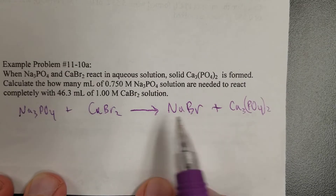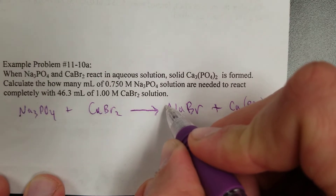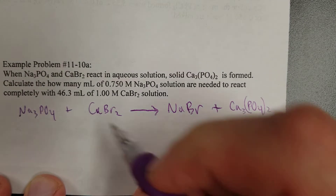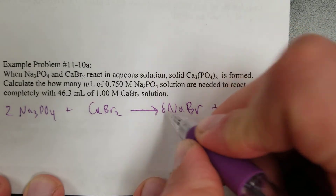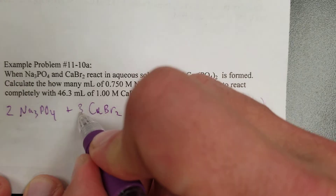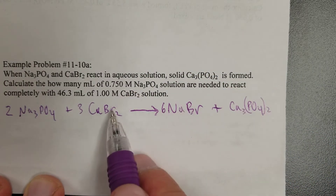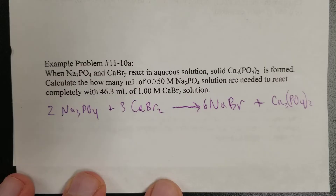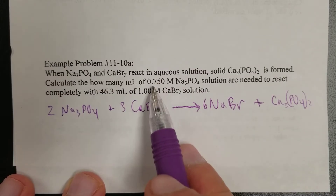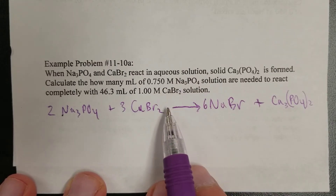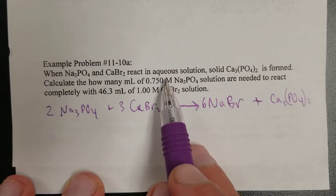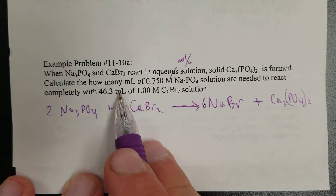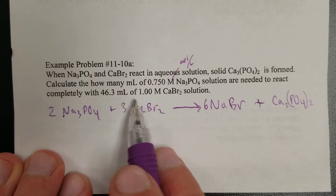Now balance it. There are 2 phosphoruses, so you need 2 of those, giving 6 sodiums — put a 6 there. Three calcium bromide units give 6 bromines, 6 bromines, 6 sodium, 6 sodium. That's all good. Next, figure out the calculation: which chemical do you start with? The answer is whichever one can give you moles. This one has molarity — moles per liter — and a volume to work with, so you start with the one where you have both molarity and volume.